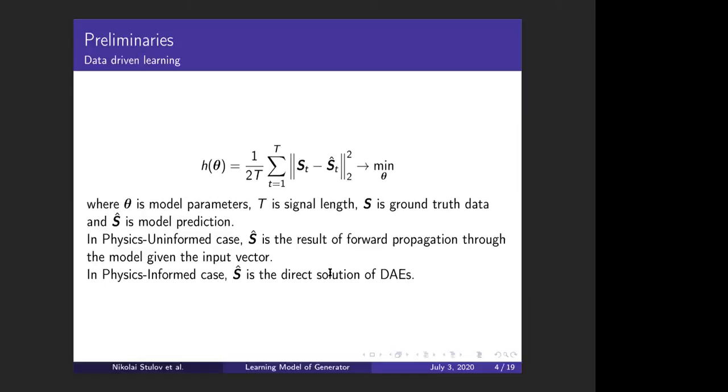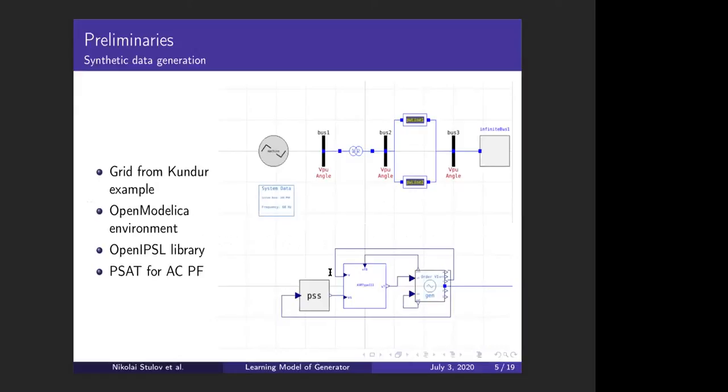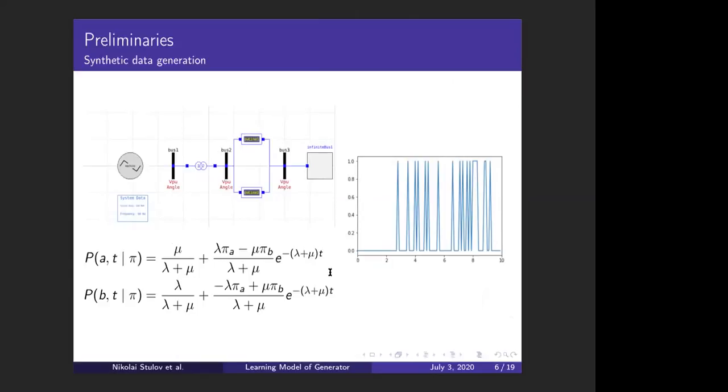Since our learning depends on data, we generated synthetic data for our experiments. We use OpenIPSL library for OpenModelica and we implemented an example grid from Kundur Power System Analysis and Control book. It's on the right-hand side of the slide on the top image. We start with stationary initial conditions corresponding to the solution of the static AC power flow found with PSAT library. Then we introduce stochastic perturbation at the external to the generator part of the grid by adding statistically steady random perturbations implemented in the form of stochastic faults.